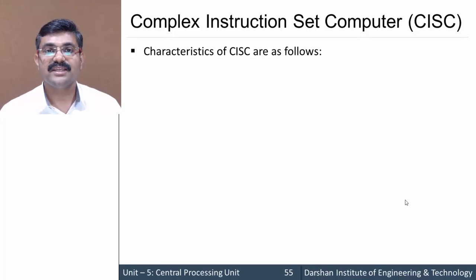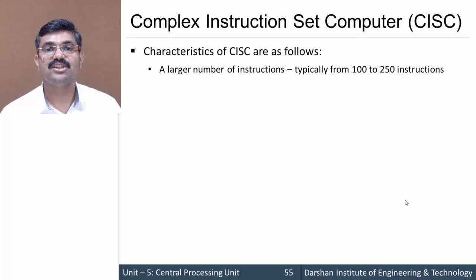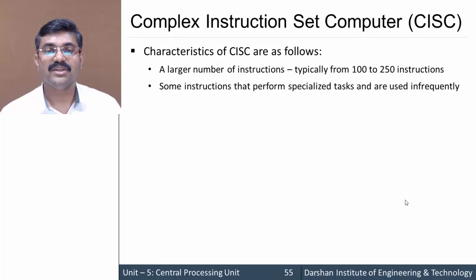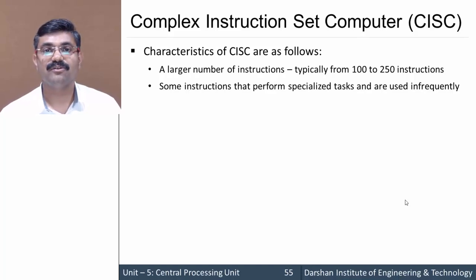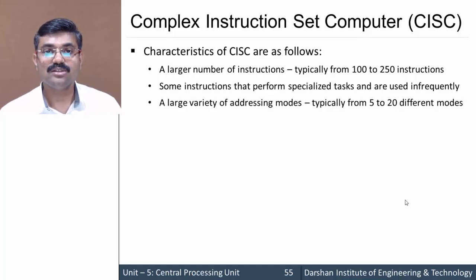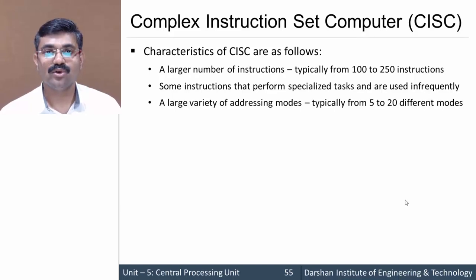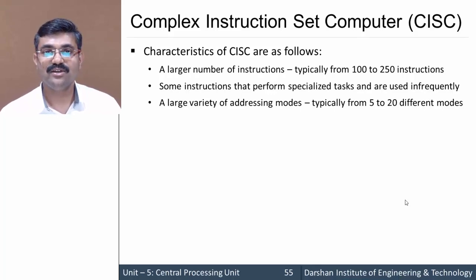The first characteristic of a CISC type computer is it has a large number of instructions in the instruction set, mostly from 100 to 250. These instructions are designed for specific tasks — for example, multiplication or division. It also has a large number of addressing modes ranging from 5 to 20, since more instructions means more ways of addressing operands.